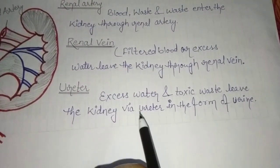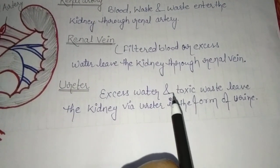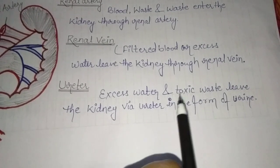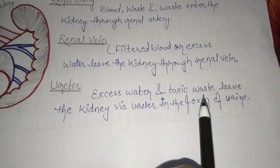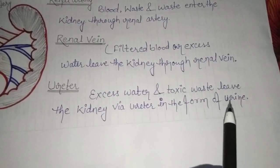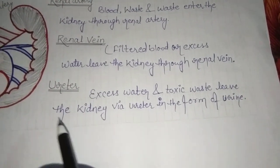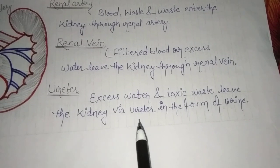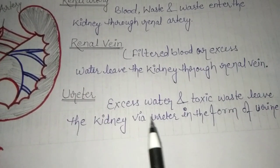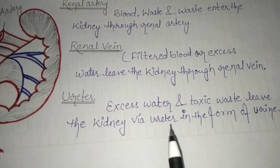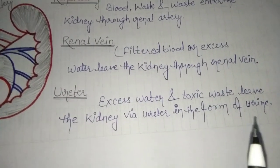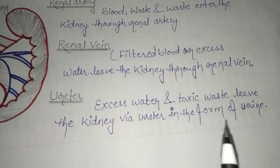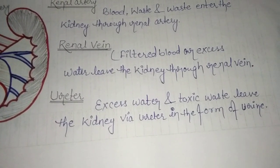Excess water and toxic waste leave the kidney via the ureter in the form of urine.